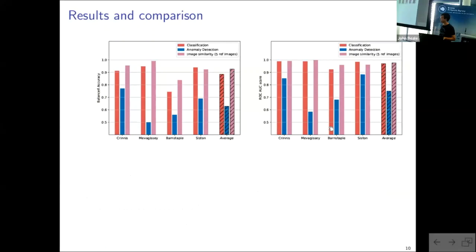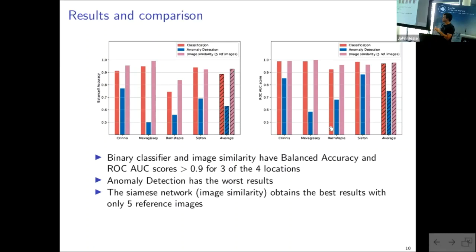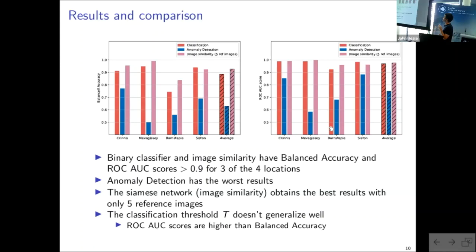So, here are the results. So on the left, here is the balanced accuracy score, on the right, here is the ROC score. So basically, the binary classifier and the image similarity approach obtain quite good results. The binary classifier is in red, and the image similarity is in pink. And the anomaly detection, in blue, obtains the worst results at each of the locations, but this approach did not need any labels. And so, also, the Siamese network here, on average, you can see that it obtains the best results, with only five reference images that were used. And the classification threshold, as I said, doesn't really generalize very well, because as you can see, the ROC scores are above the balanced accuracy. And as we've seen, the Barnstaple location, so the third location, you can see that, each time, it's the worst location, and that obtains the worst results. So I wanted to investigate what was going on there.